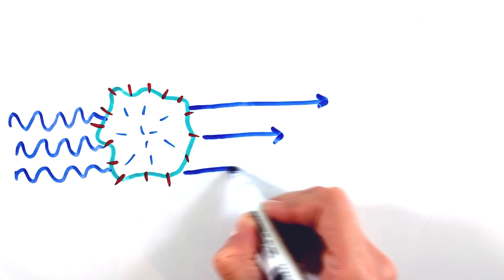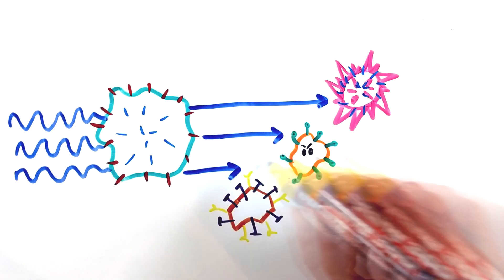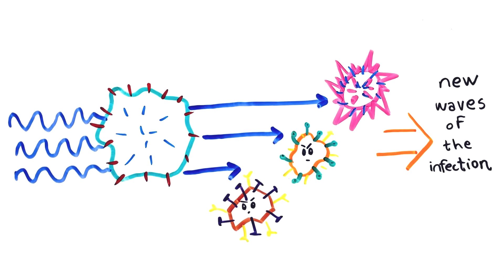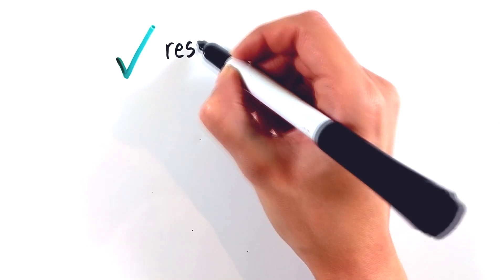Moreover, viruses tend to change and mutate rapidly, transforming into a more potent form of infection and therefore triggering the second wave of virus spread, which delays vaccine development even more.